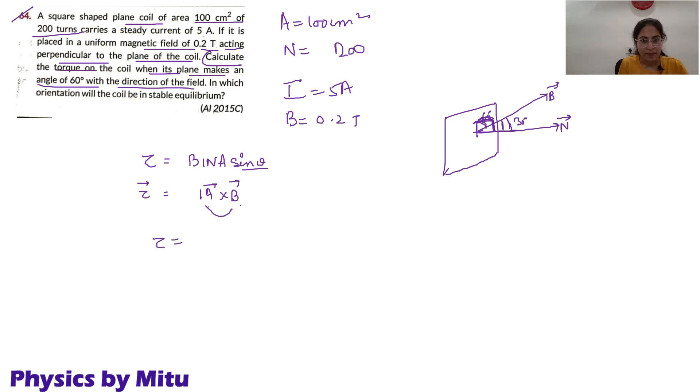So, torque is B I N A sin 30. The magnetic field is 0.2. I is 5, N number of turns is 200. Area is 100 centimeter square divided by 100 to convert into meter square, and sin 30 is 1 by 2.